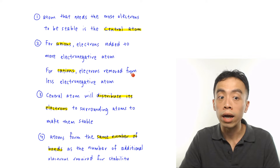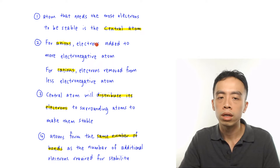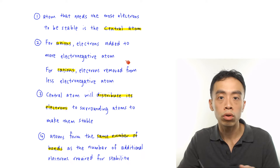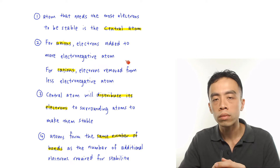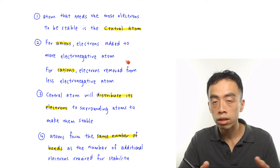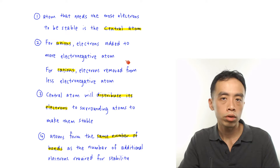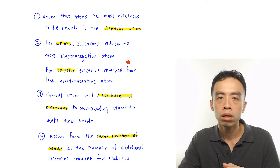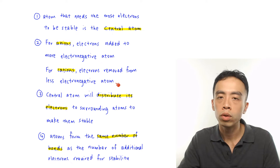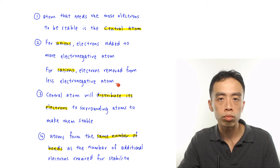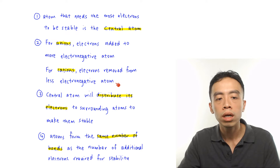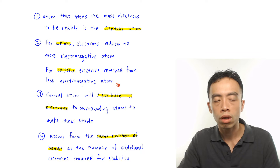The second guideline: when we talk about ions, if I have an anion, the electrons will be given to the more electronegative atom. That means when you have an excess electron and you throw the electron in, the element that is more electronegative would like the electron more, so the electrons will be assigned to it. On the other hand, for cations, the electrons would be removed from the less electronegative atom — because it doesn't like the electron that much, it is more willing to give it up.